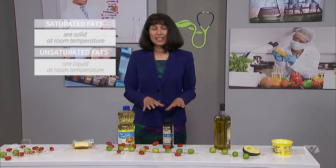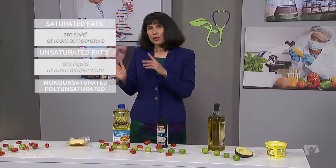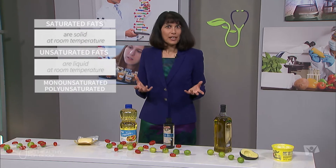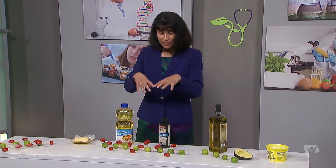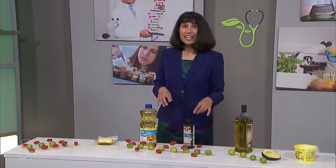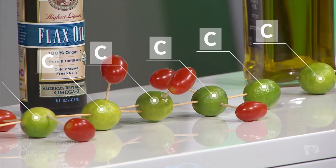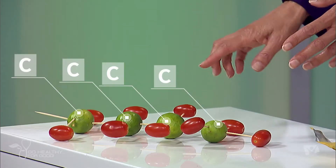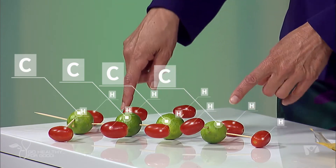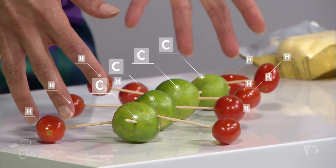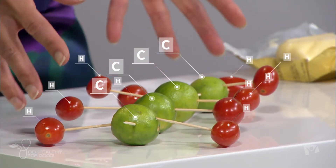The unsaturated fats are divided into monounsaturated and polyunsaturated. But what does the term saturated and unsaturated actually mean? We need to take a look at the molecular composition of a fatty acid chain. We've used little limes here to represent our chain of carbon molecules, and the chains are a lot longer than what we've got here. If these carbon molecules have a single bond between them, that means there's space to put hydrogen to each side of them. We call this saturated because it's saturated with hydrogen — that is a typical structure of a saturated fat.